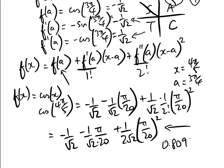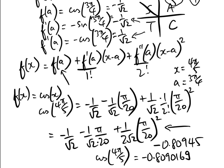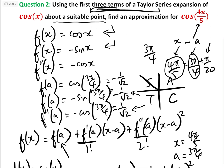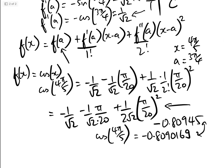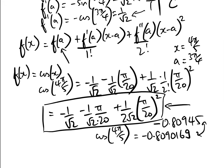Working this out gives approximately minus 0.80945, and the actual value of cos of 4π over 5 using a calculator is minus 0.8090169 — very close indeed. With only three terms, because we chose our point a equals 3π over 4 to be close — only π over 20 away from 4π over 5 — it converges very quickly. Depending on whether they want a calculator answer, you either leave it in the expanded form or give the numerical approximation. If they ask for the error, simply work out the percentage difference between the two values.